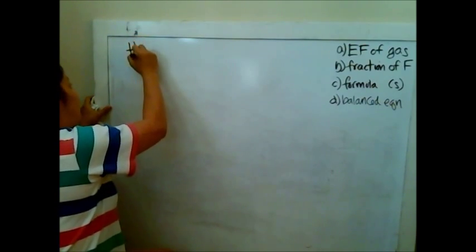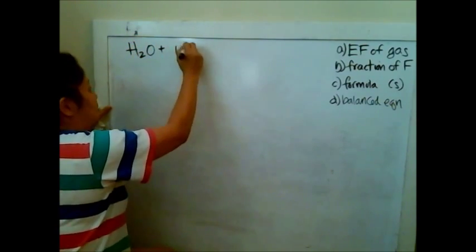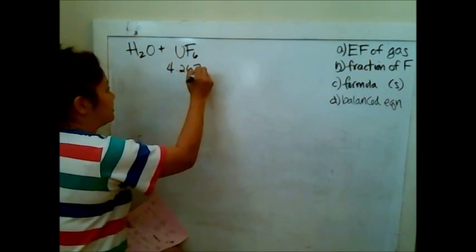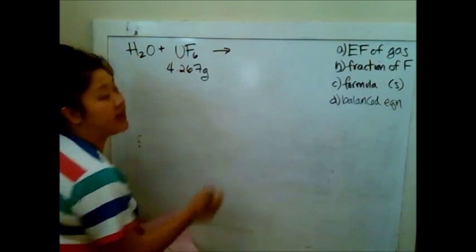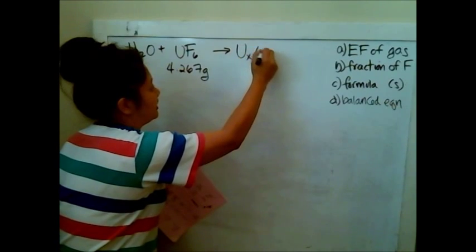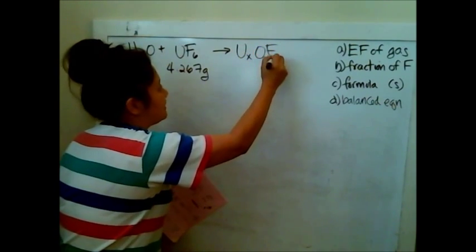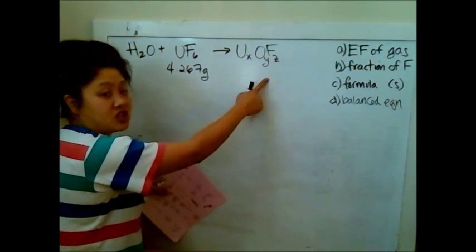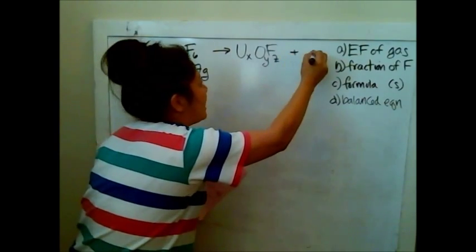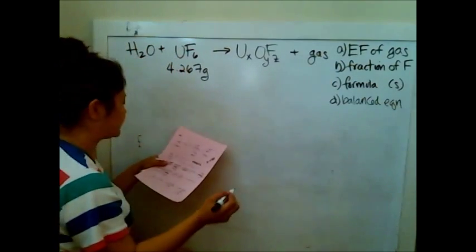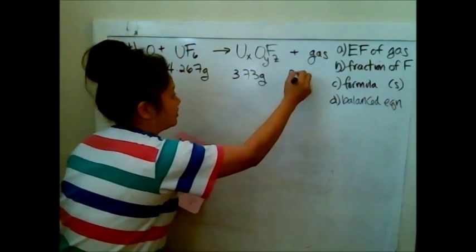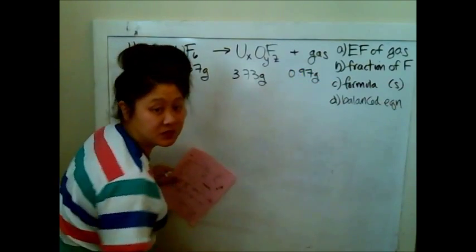So it tells you that water is added to UF6, and it tells you that you have 4.267 grams of UF6, and that you produce some kind of an unknown solid, which we're going to say U something, O something, F something, because it tells you there's only uranium, oxygen, fluorine. You can see why we call this the UFO problem. We've got a sense of humor. And then there's some kind of an unknown gas. And it tells you that there's 3.73 grams of the solid and 0.97 grams of the gas, which we don't know what it is yet.